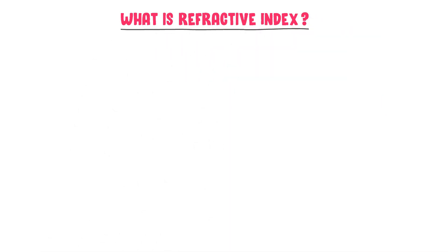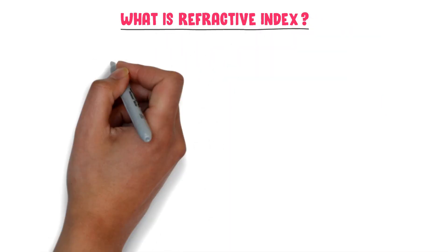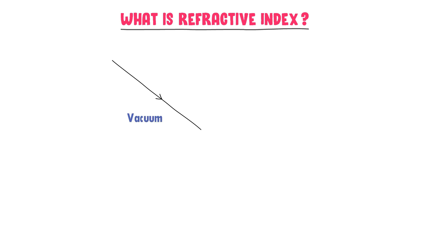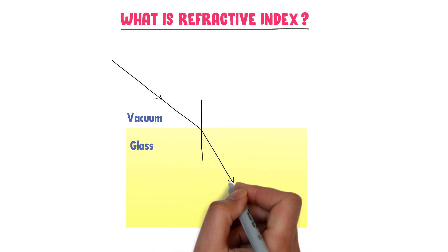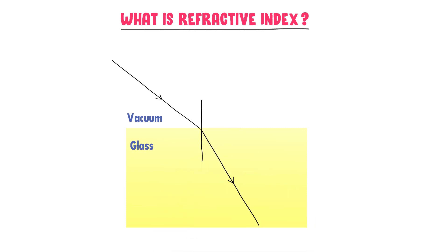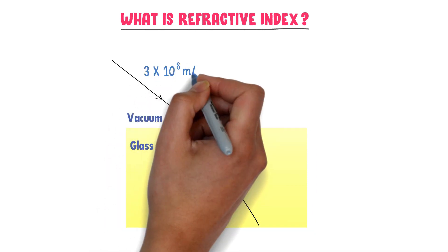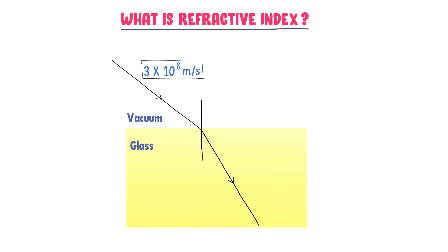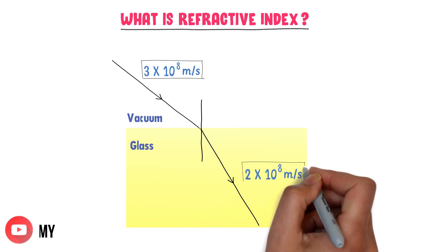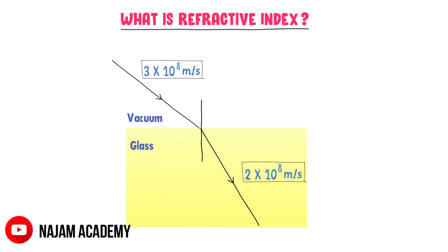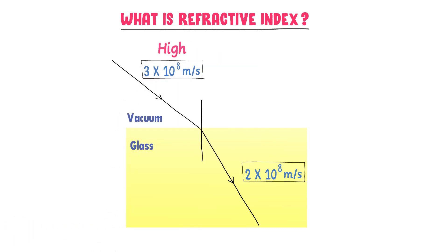What is refractive index? Consider that an incident light ray is traveling in the vacuum. Let it hit the surface of a glass and enter into it. We know that light is refracted towards the normal in this case. The speed of light in the vacuum is 3×10⁸ m/s while the speed of light in the glass is 2×10⁸ m/s. So the speed of light in the vacuum is high and the speed of light in the glass is slow.